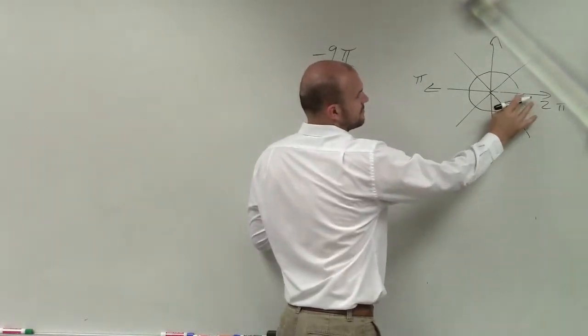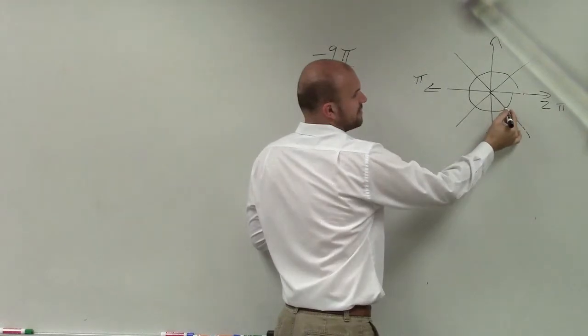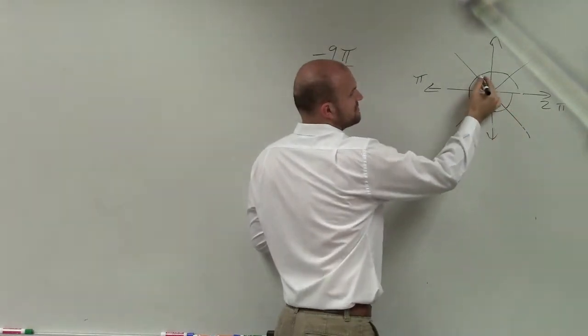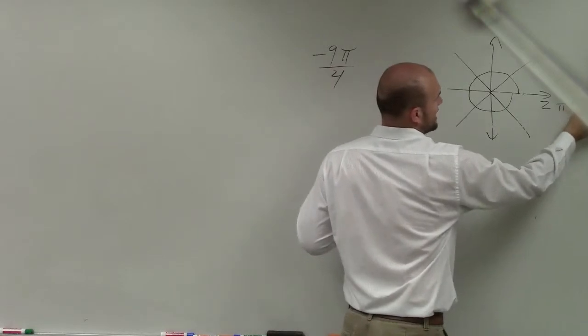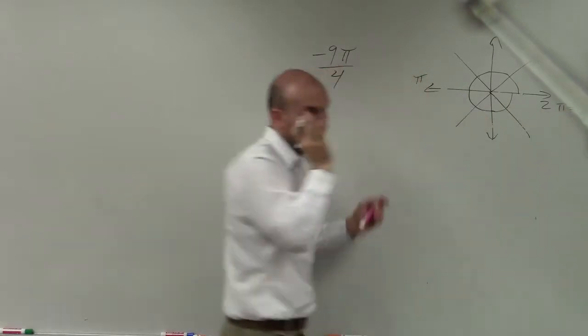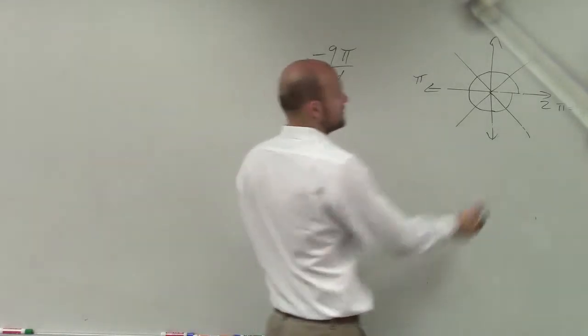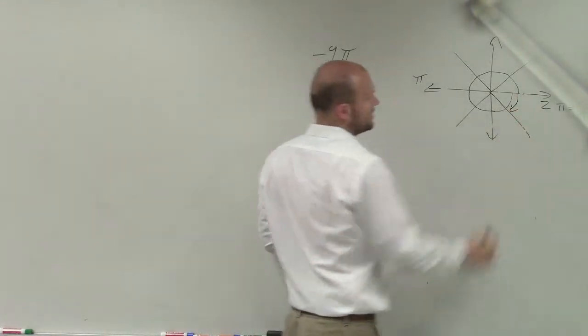So negative 1 fourth, 2 fourths, 3 fourths, 4 fourths, 5 fourths, 6 fourths, 7 fourths, 8 fourths. Is 8 pi over 4 the same thing as 2 pi? Yes. But remember, going in the negative direction. So therefore, my angle is down here.